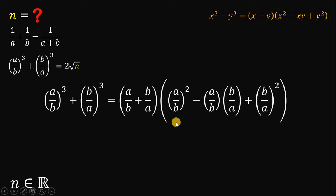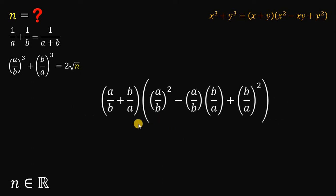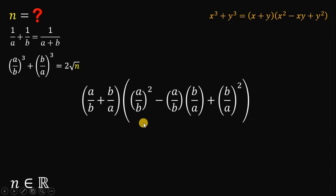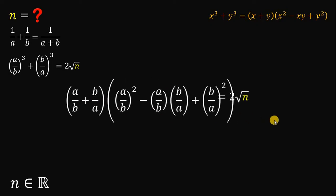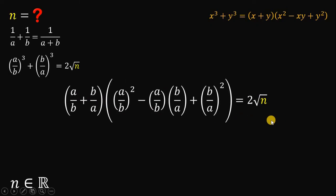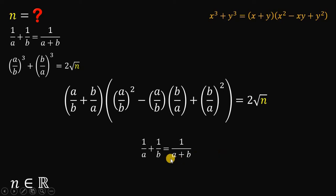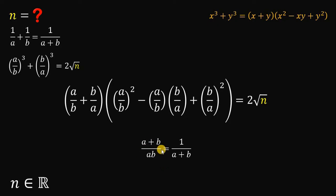This factored form is also equivalent to 2 times the square root of n. Now let's use the given equation 1 over a plus 1 over b equals 1 over (a plus b). First, simplify the left-hand side: 1 over a plus 1 over b gives us (a plus b) over (a times b). Then multiply (a plus b) on both sides, and then multiply a times b on both sides.